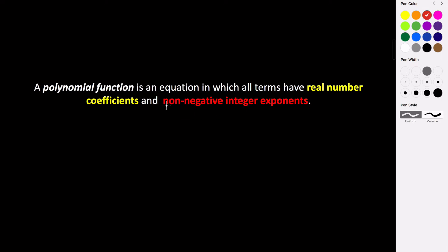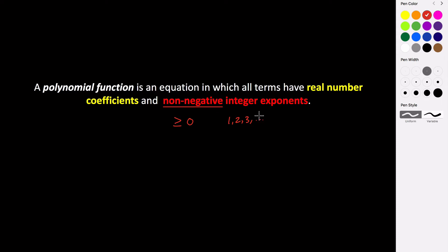Non-negative means that our numbers have to be greater than or equal to zero, and integers are numbers like one, two, three, et cetera — all of our positive whole numbers. So our exponents can't be negative; they have to be positive whole numbers. That's how you can tell if something is a polynomial function: based on the power of x and whether or not our coefficients are real numbers.